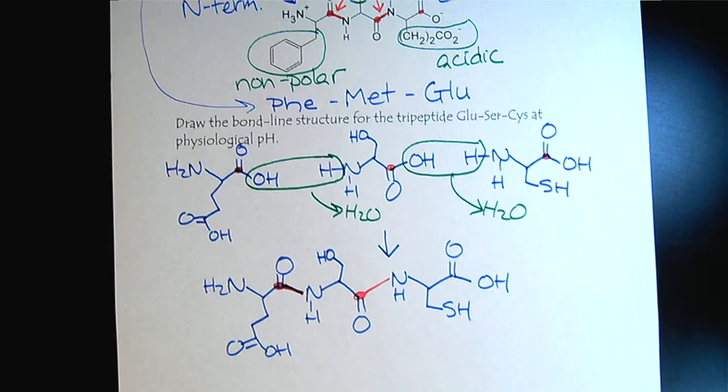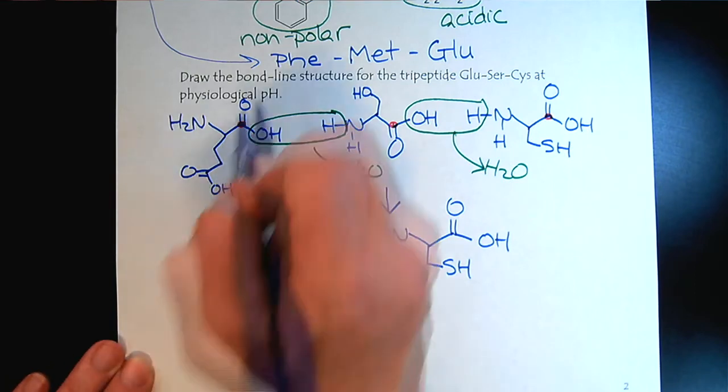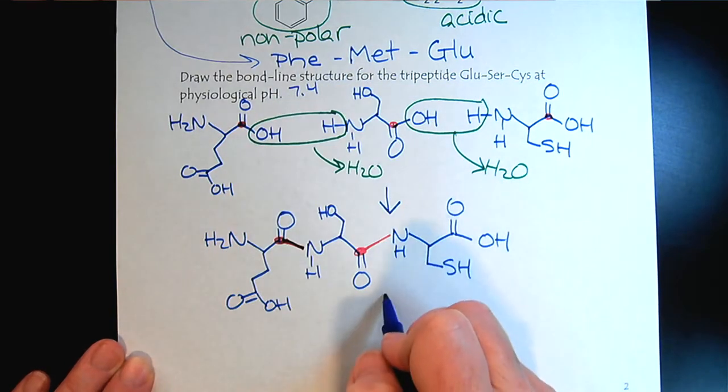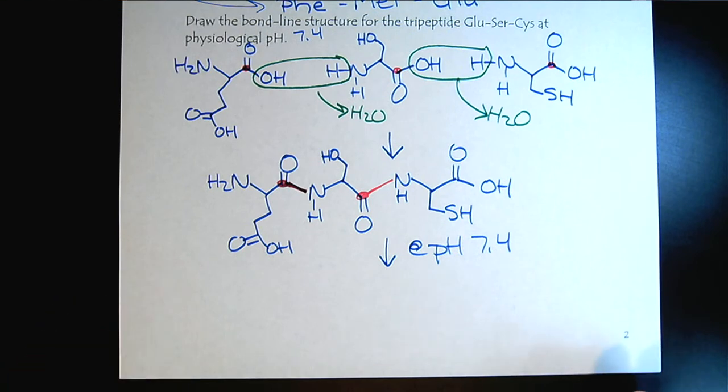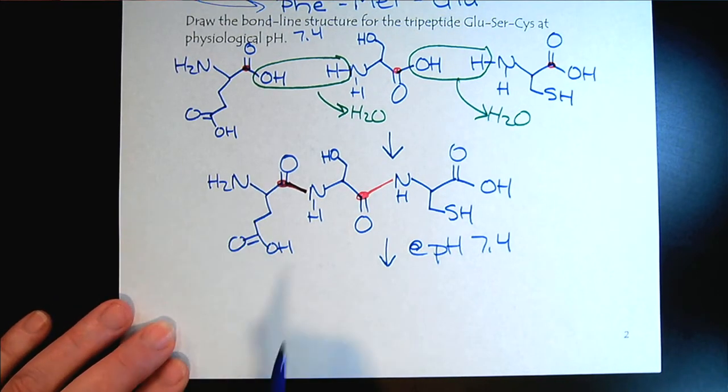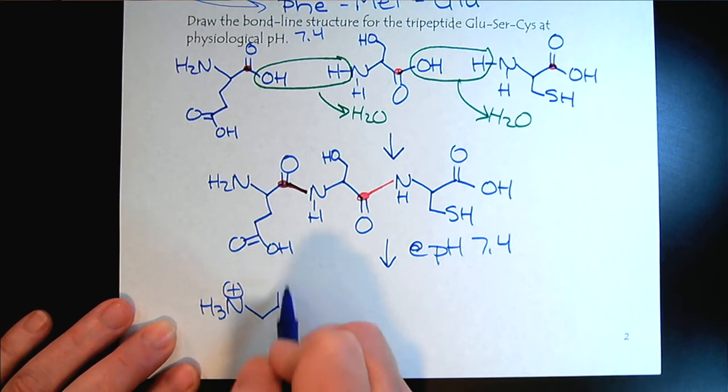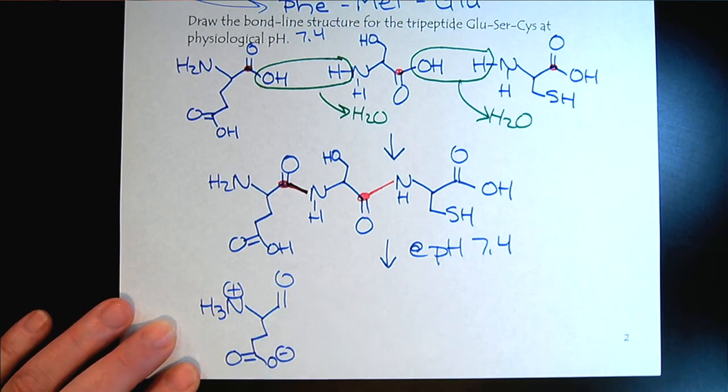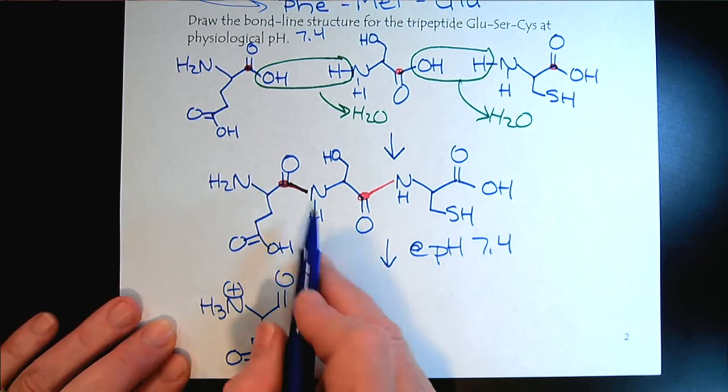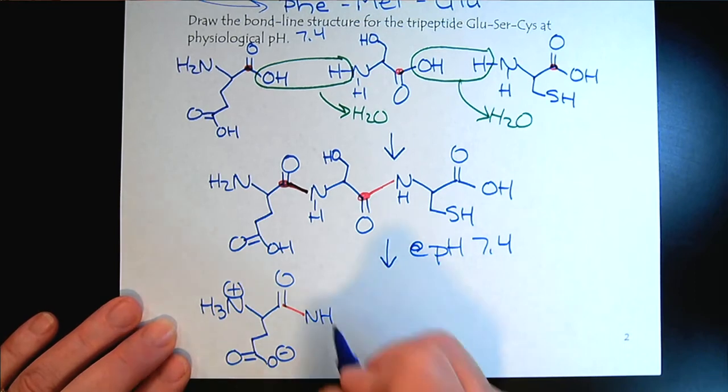The last piece is to redraw it at physiological pH, which is 7.4. Now we're going to add pH 7.4, so this is where we overlay our acid-base chemistry. Anytime we have an amine we want to show it protonated. This carboxylic acid here - carboxylic acids get deprotonated. This is an amide, so nothing happens there. There's our amide bond and the NH tends to get written up like that.